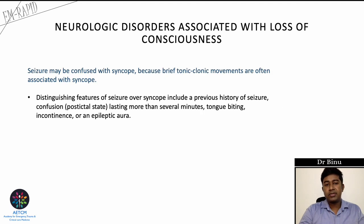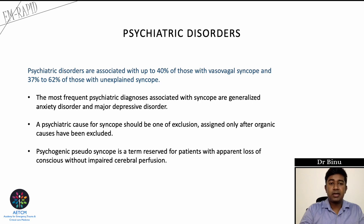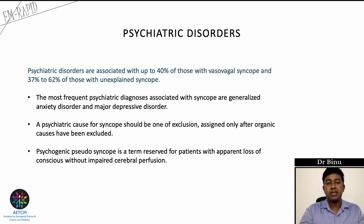Seizures may be confused with syncope because brief tonic-clonic movements are also seen in syncope. Distinguishing features of seizure include previous seizure history, post-ictal confusion lasting more than several minutes, history of tongue bite, incontinence, and an epileptic aura. Psychiatric disorders are associated with about 40% of patients presenting with vasovagal syncope and 37 to 62% of those with unexplained syncope. The most frequent psychiatric disorders are generalized anxiety disorder and major depressive disorder; psychiatric cause is one of exclusion after organic causes have been considered.